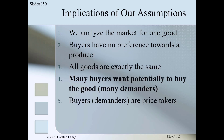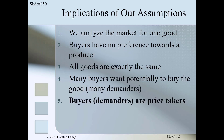Assumption number four — many buyers want potentially to buy the good, which we call 'many demanders' — implies no buyer has negotiation power since there are so many potential buyers in the market. The implication of the last assumption together with the others makes price the most important determinant for a consumption decision. If a consumer has no reason to buy from a specific supplier, all goods are the same, and they have no power to change the price, then the best thing to do is observe the price, accept it, and decide how much to buy. This is assumption number five: buyers are price takers.